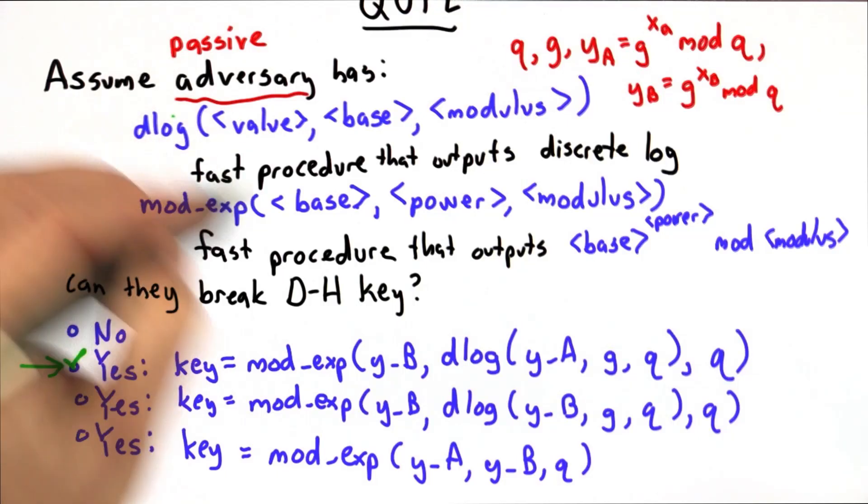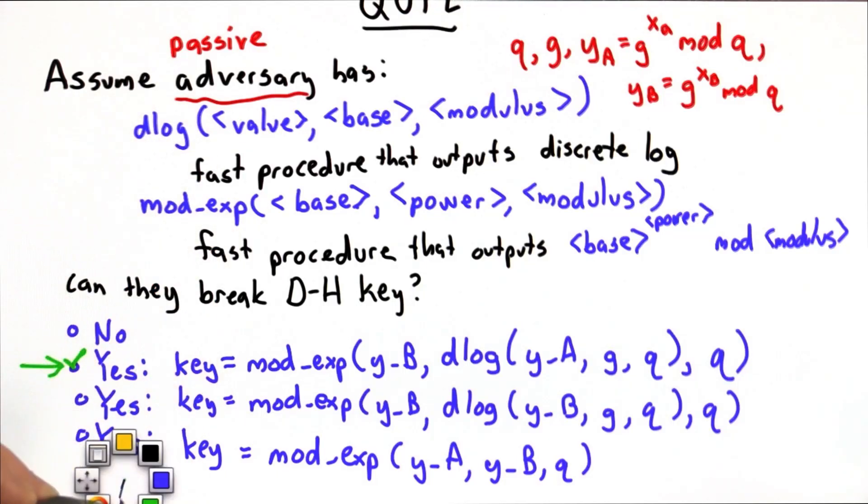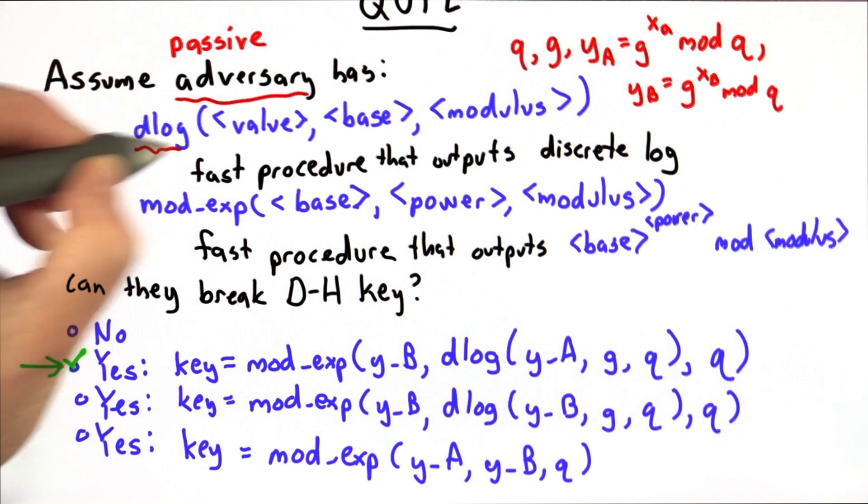The answer is the second choice. If it were possible to compute discrete logs quickly and our adversary had a way to do that,